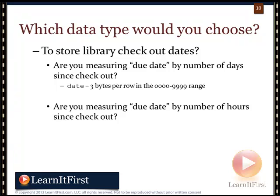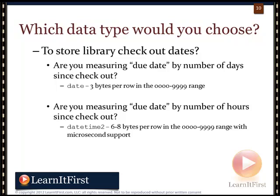Now if we measure due date by number of hours — say a rule that books must be returned within 48 hours — then we definitely need accuracy down to at least the minute. I would choose DATETIME2 for this. As I said, DATETIME2 is my default date-and-time data type in SQL Server 2012. It gives accuracy all the way down to 100 nanoseconds.